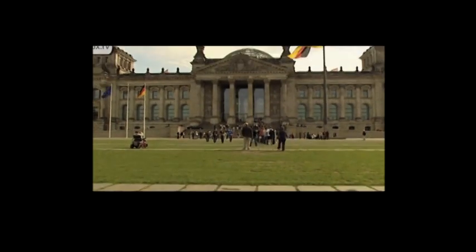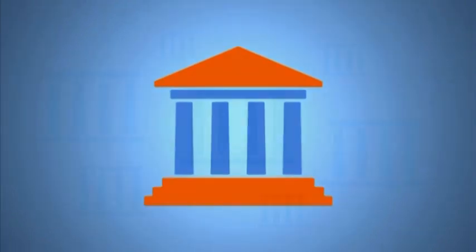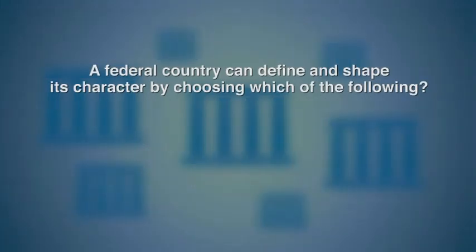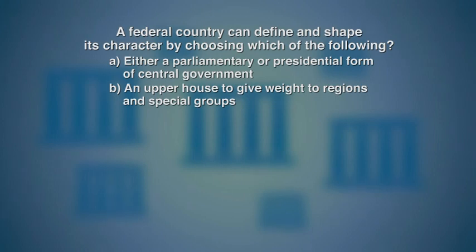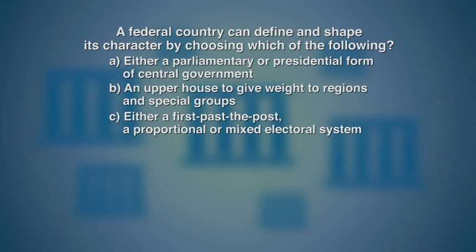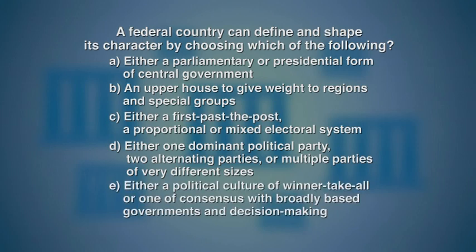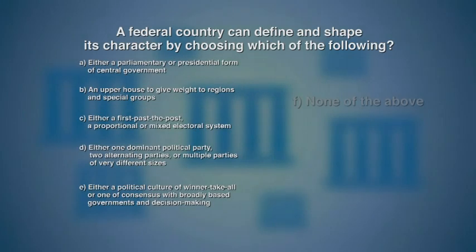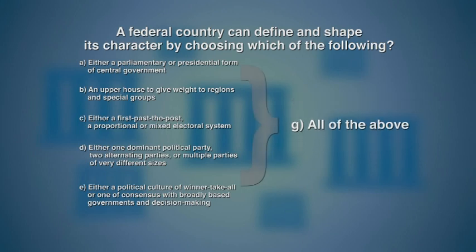Now let's go back to the question which started this module: how do the institutions of the central government define and shape the character of a federal country? Here is a multiple-choice question. A federal country can define and shape its character by choosing: A) either a parliamentary or presidential form of government; B) an upper house to give weight to regions and special groups; C) either a first-past-the-post, proportional, or mixed electoral system; D) either one dominant political party, two alternating parties, or multiple parties of different sizes; E) either a political culture of winner-take-all, or one of consensus with broadly-based governments and decision-making. The answer is G — all of the above.